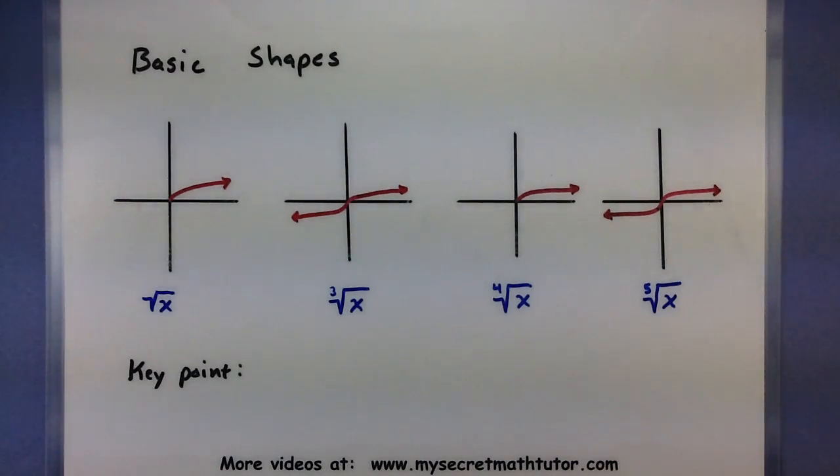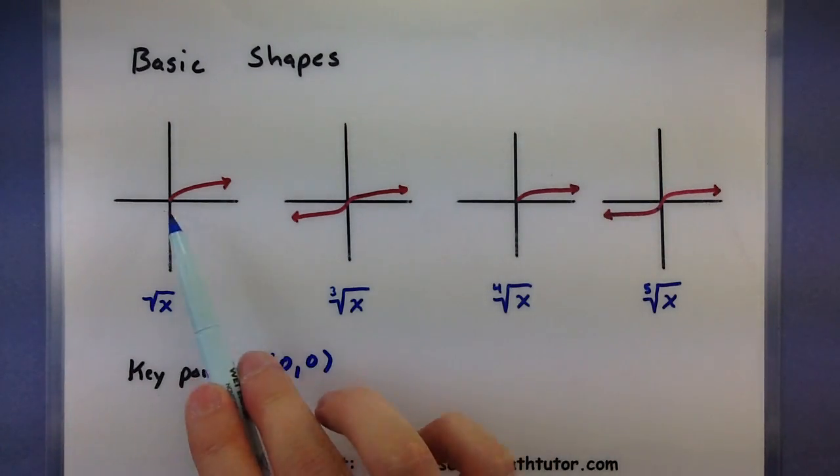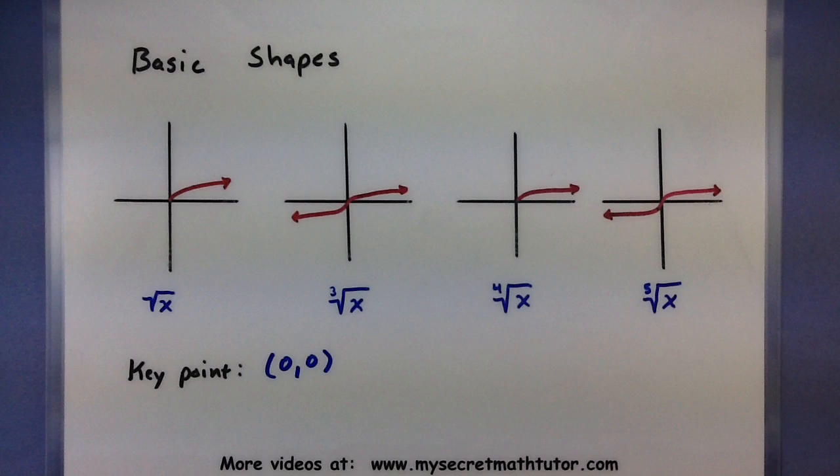So with all of these try and keep track of some very key points while you're doing these transformations. One key point that is common to all of these is the point (0,0). So that's usually a good one that you can kind of watch where it moves especially when you're doing those shifts.